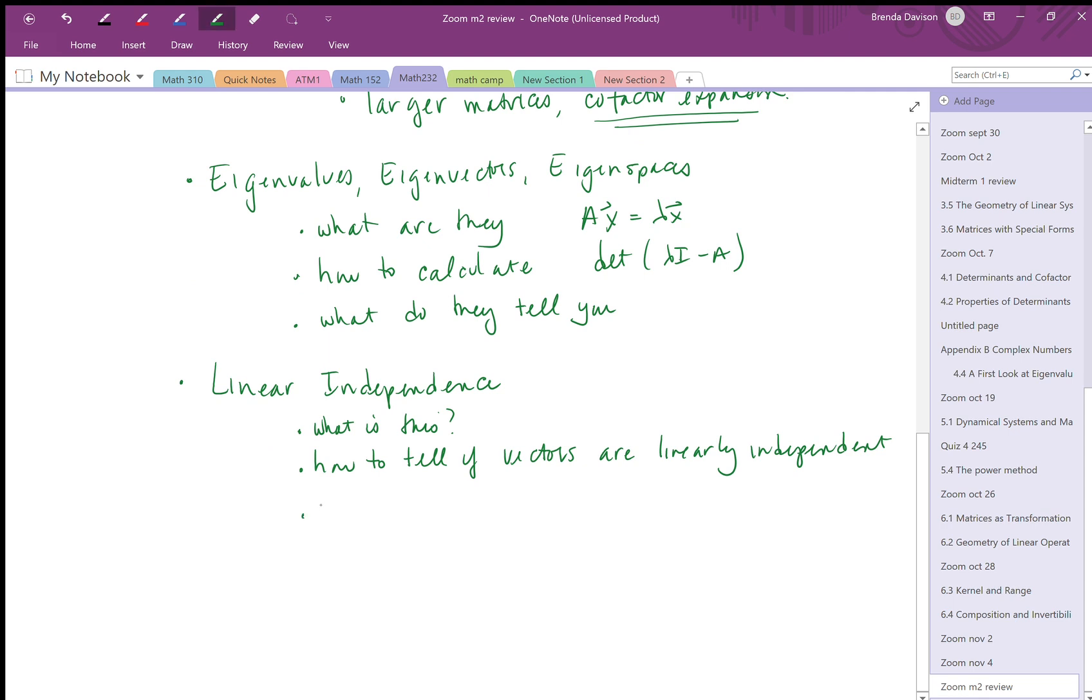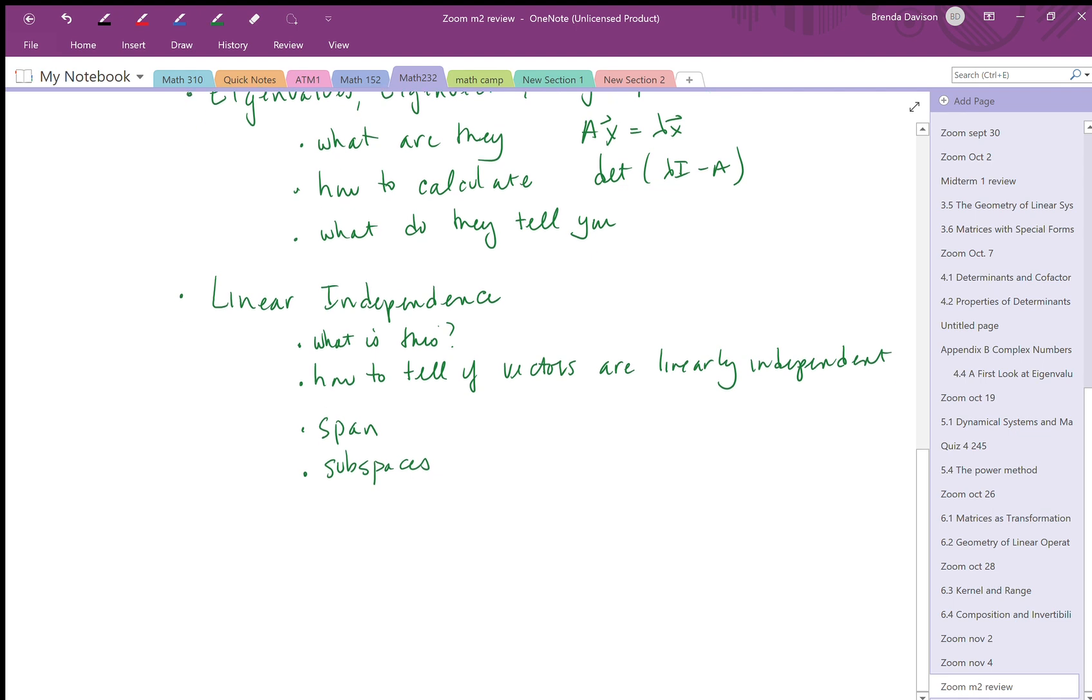The word span: when you look at some number of vectors and you ask what is the span of this, what does that mean? Subspaces: if you have a space spanned by some vectors, what are the possible subspaces? We had the idea of the column space of a matrix and the row space of a matrix.